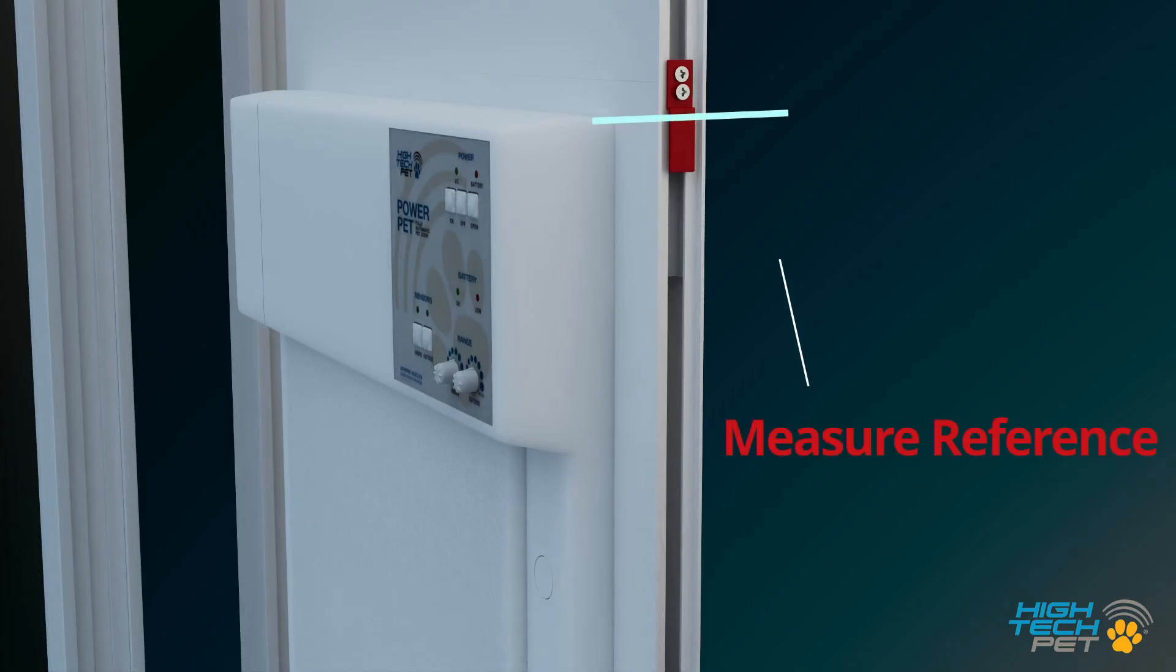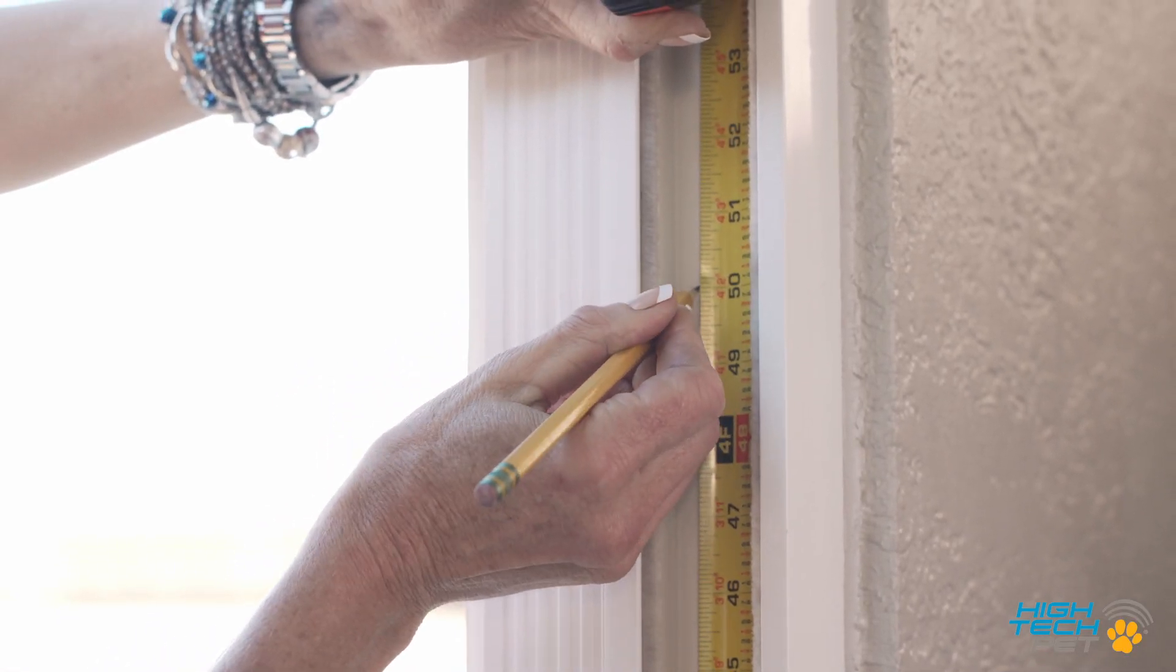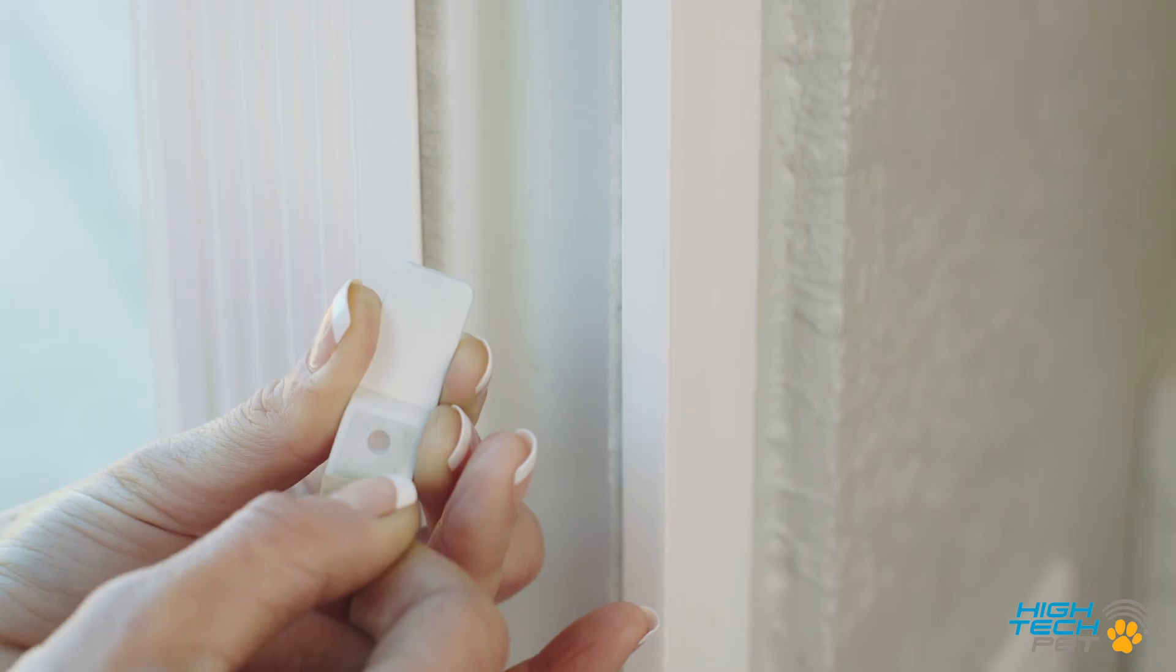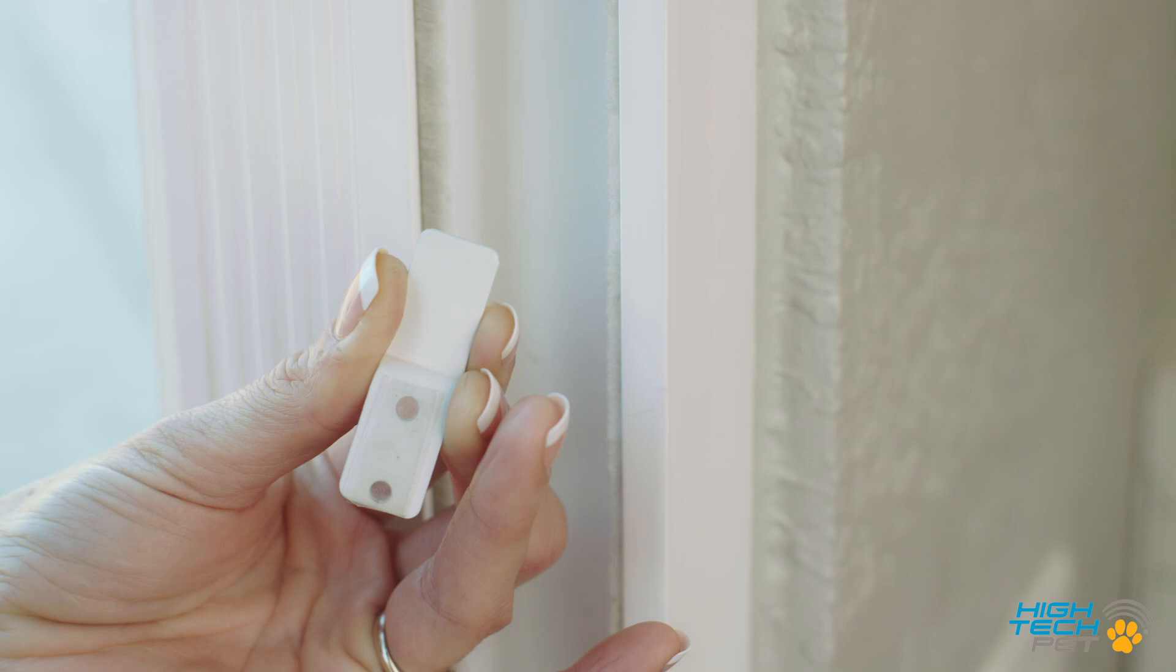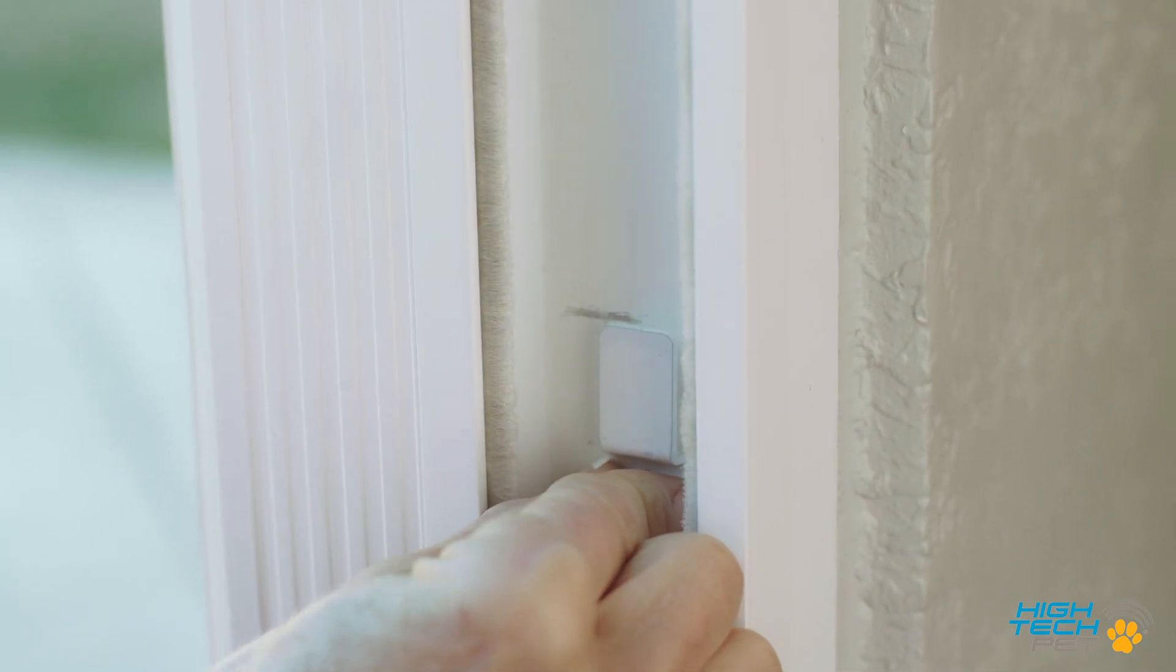For the second tab measure up and mark the position on the inside of the door track. Peel the adhesive backing and stick the locking door tab to the marked position on the wall side of the patio door frame.